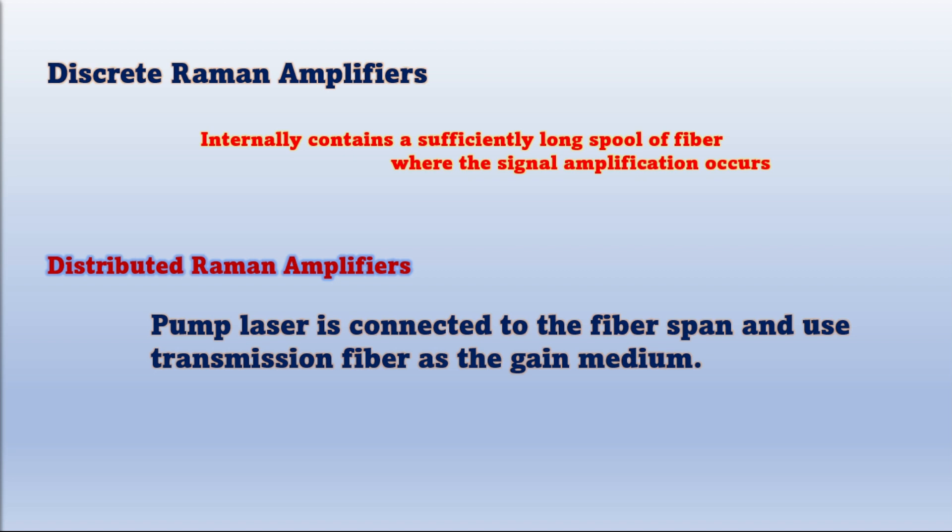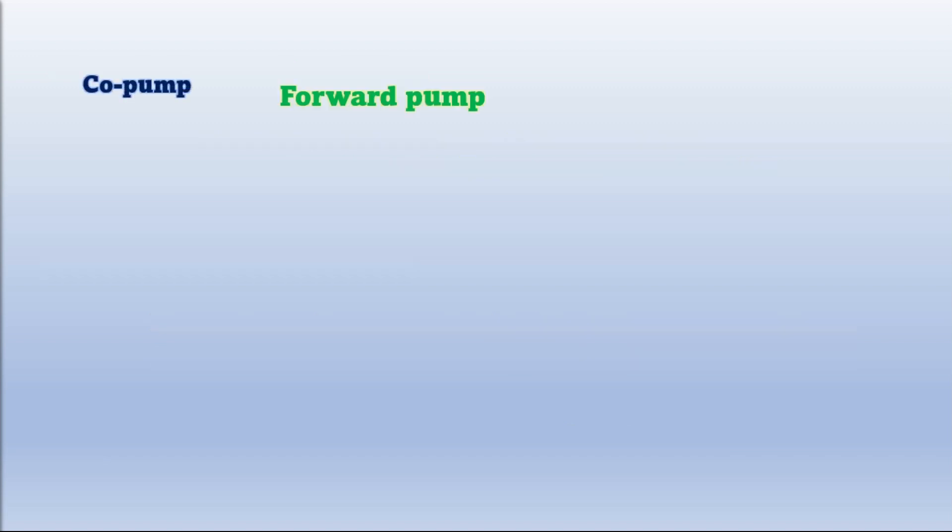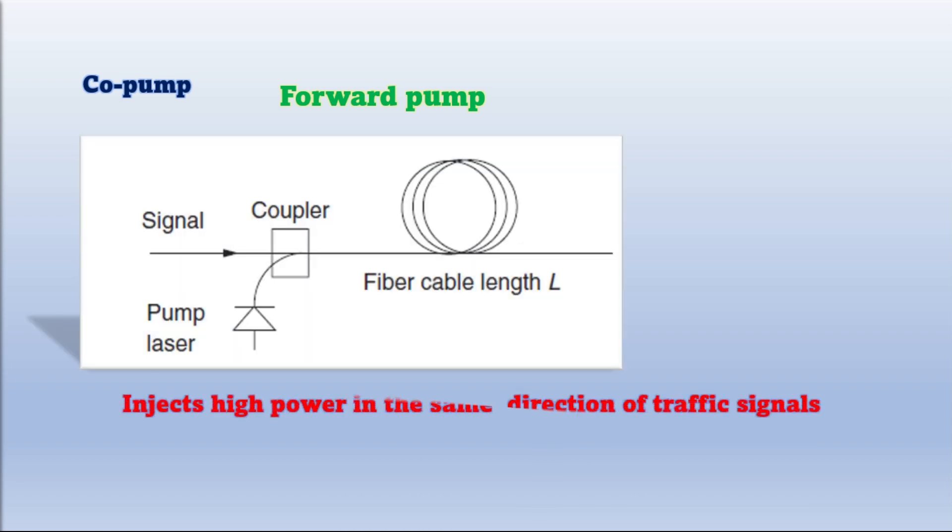Distributed Raman amplifiers are used in two configurations: Co-pump or counter configuration. Co-pump configuration, also called forward pump, injects high power in the same direction of traffic signals. The advantage of this configuration is that it produces less noise.